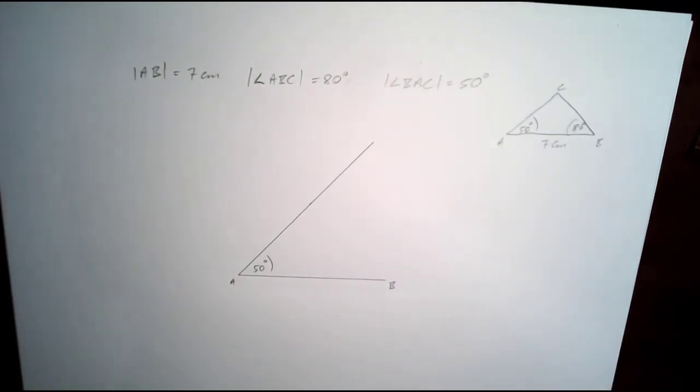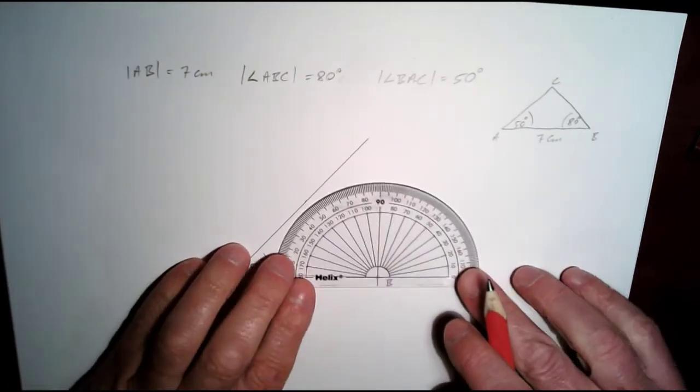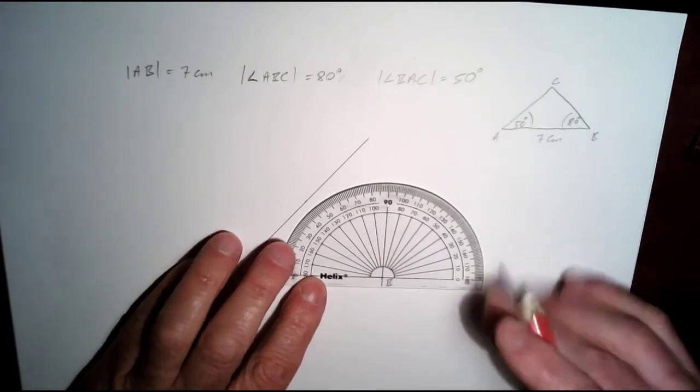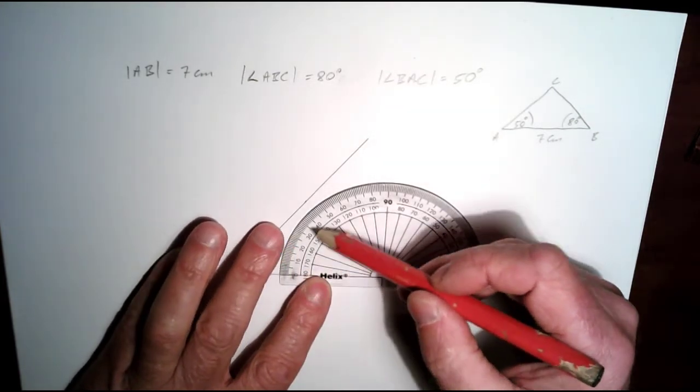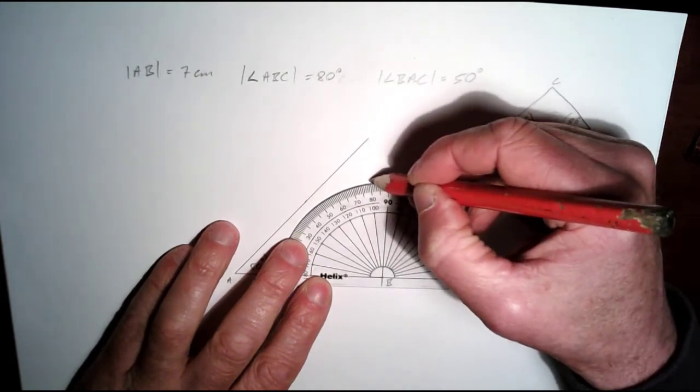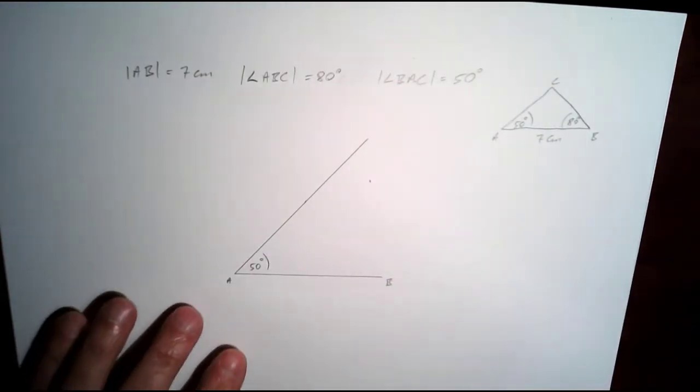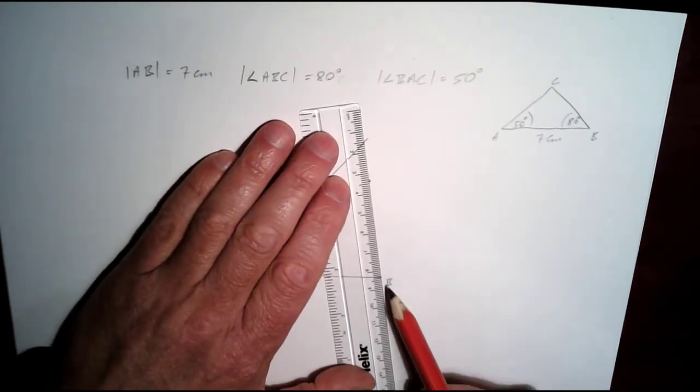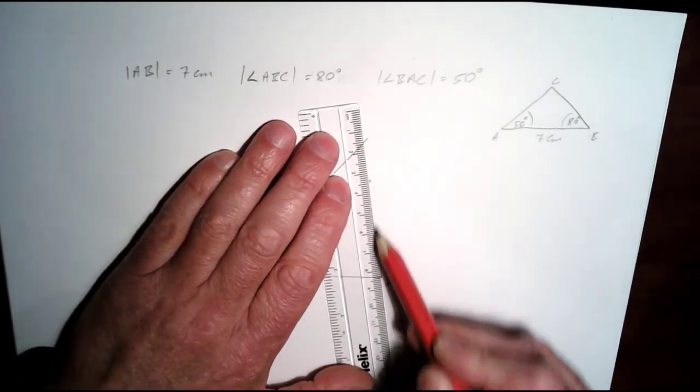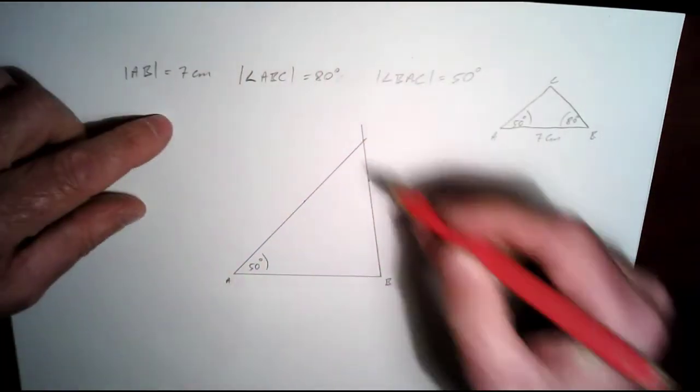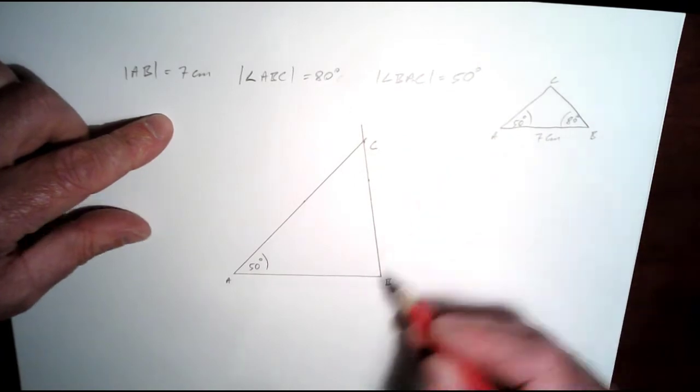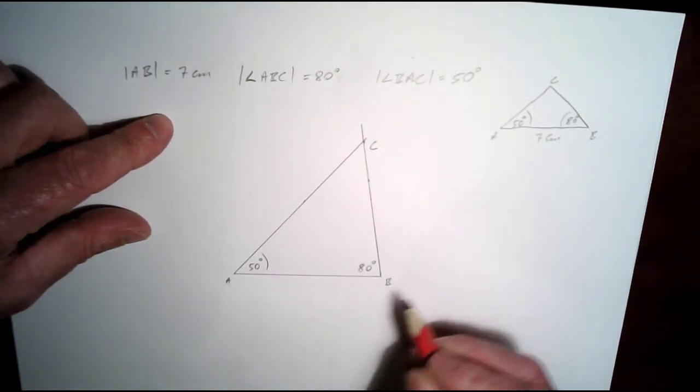On the other side then we've got to draw 80 degrees. So from B then we draw 80 degrees. So start on the outside here, work your way up to 80 degrees. There's 80 degrees there. And again just connect B up to that particular point and on a bit further. So this point here then is going to be C. And this angle here is 80 degrees, and this is 7 cm.